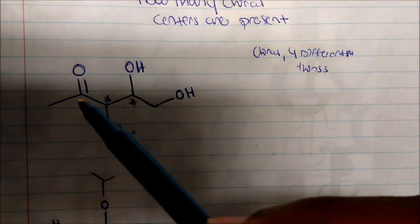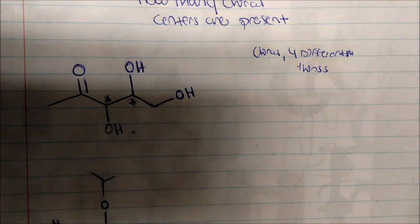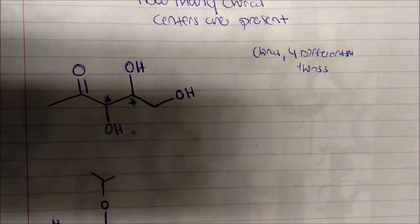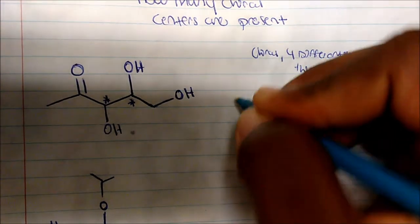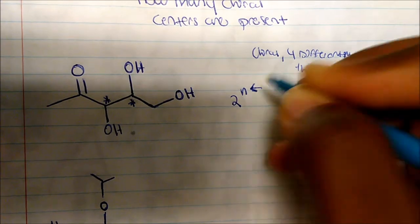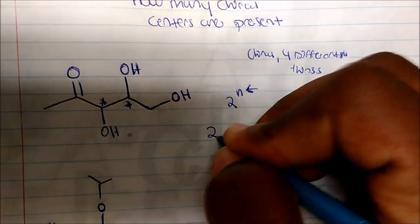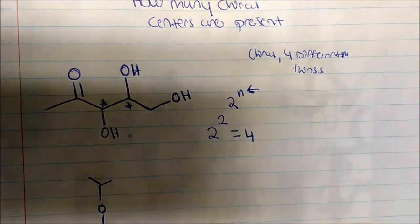This carbon has a double bond, so there's no free rotation — it can't be a chiral center. This carbon has three hydrogens, so that's not chiral either. The number of stereoisomers we can draw is 2^n, where n is the number of chiral centers.